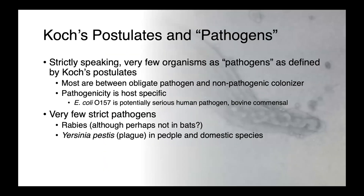The issue with Koch's Postulates is that, strictly speaking, very few organisms are actually pathogens. Most bacteria and most fungi are somewhere between obligate pathogens and non-pathogenic colonizer. Pathogenicity can be host-specific. For instance, E. coli O157 is a potentially very serious human pathogen causing gastroenteritis, systemic disease, and is associated with hemolytic uremic syndrome, but it's a commensal in the bovine gut. So, is it a pathogen or isn't it? Well, it really depends on the context.